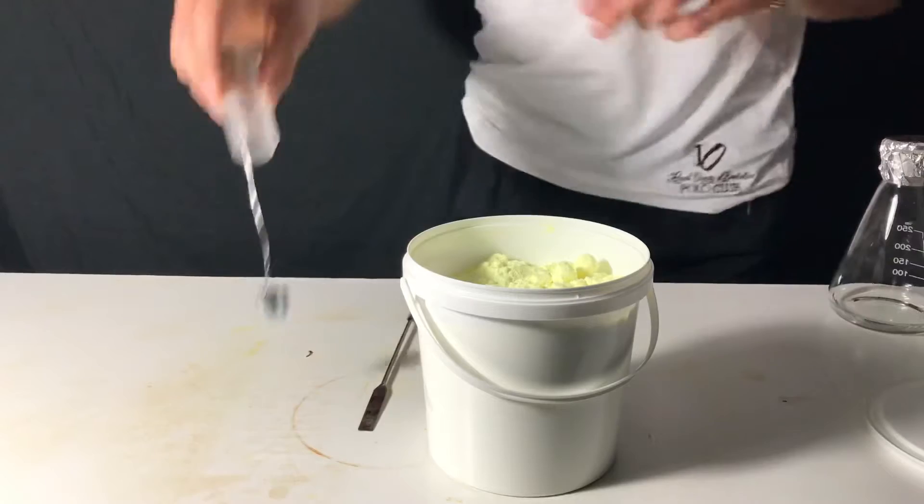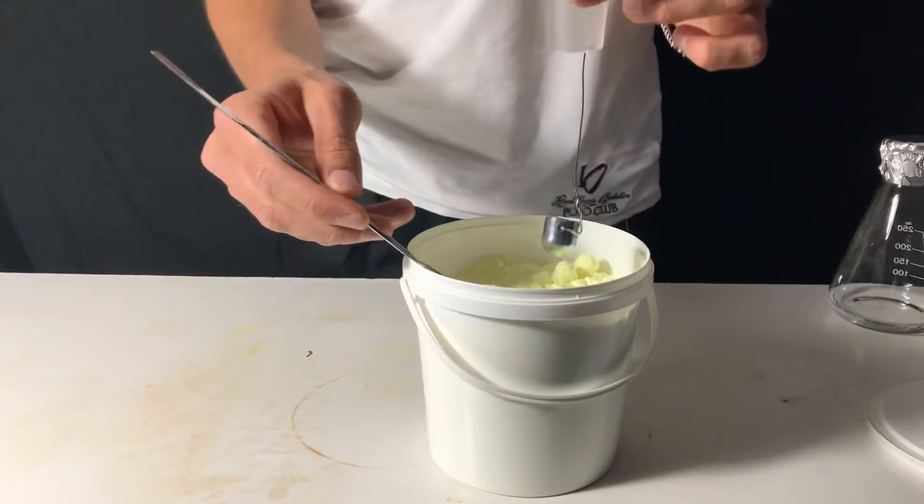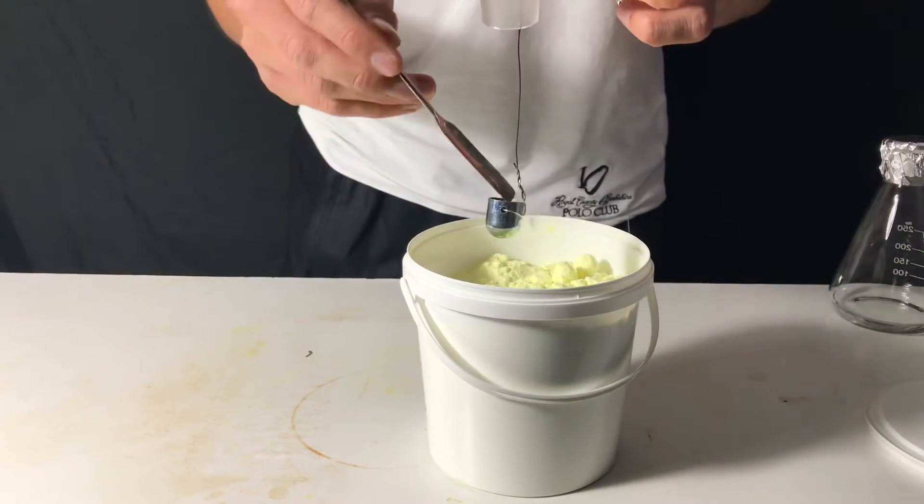We start off by adding a really small amount of sulfur to our burning dish.